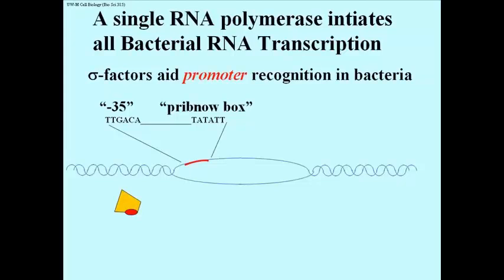To be a promoter, these two sequences must be separated by a precise number of nucleotides. But the exact sequence of DNA between the Pribnow box and the -35 element is not important.